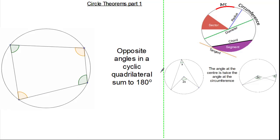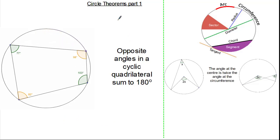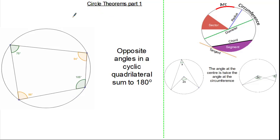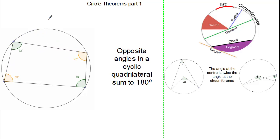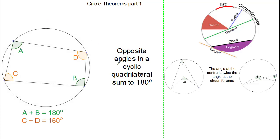Now let's look at another circle theorem. This circle theorem states that the opposite angles in a cyclic quadrilateral always sum to 180 degrees. The colour-coded opposite angles will always sum to 180 degrees no matter where the points are on the circumference. It is important to remember that a cyclic quadrilateral gets its name from the fact that the vertices of the quadrilateral must be on the circumference. Only when these vertices are on the circumference will the opposite angles sum to 180 degrees.